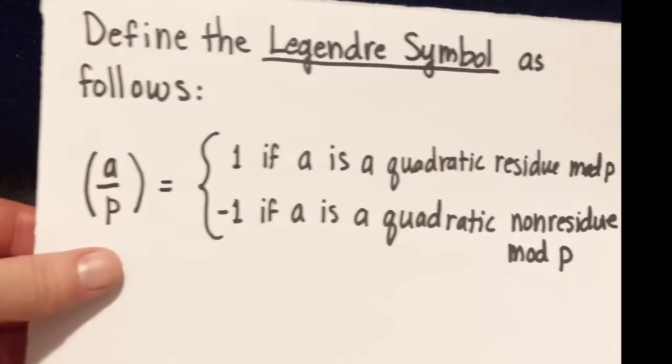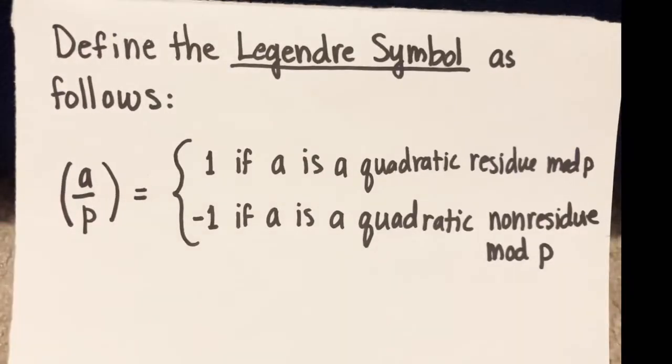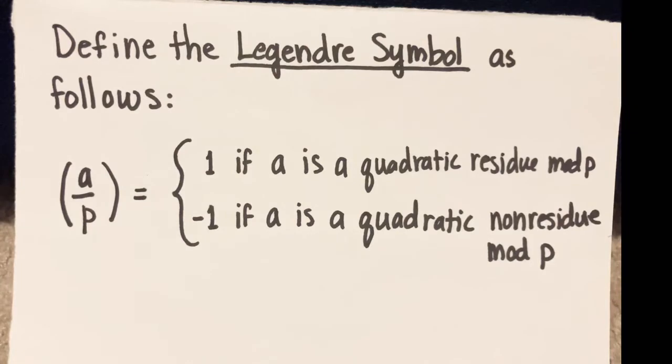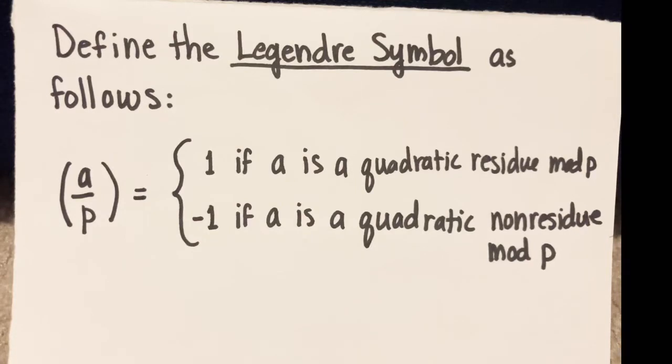We will define the Legendre symbol a on p. This is not a fraction. It looks like a fraction, but this is the Legendre symbol right here. This is a on p, and a on p is equal to 1 if a is a quadratic residue mod p, and it's equal to negative 1 if it's a quadratic non-residue mod p.